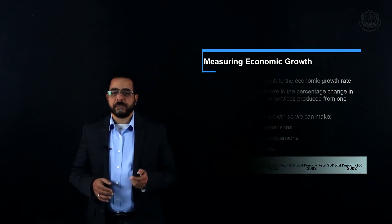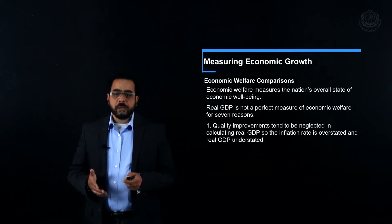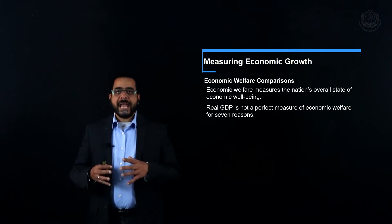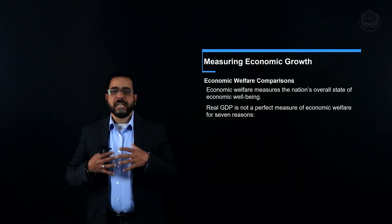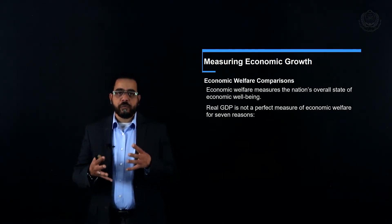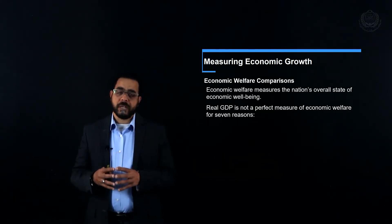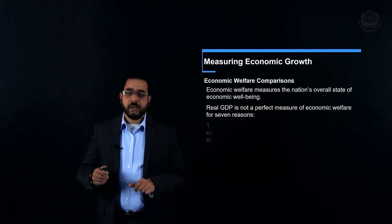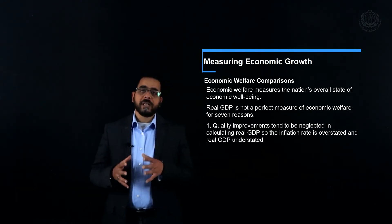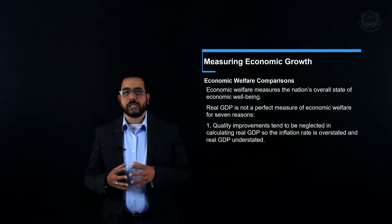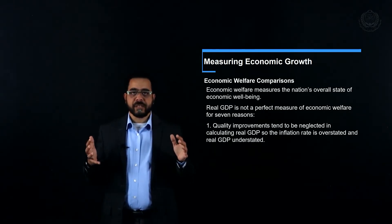Let's see how we can use GDP to make an economic welfare comparison. GDP measures production and shows how many goods and services we can enjoy, so it is a measure of our welfare or standards of living. However, it is not a perfect measure — it has seven defects. The first defect is that it tends to ignore quality improvements and new goods.